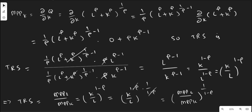We now calculate the technical rate of substitution, which is the ratio of marginal physical productivities, and this equals (K/L) to the power (1 minus rho). To solve for K/L, we raise both sides to the power 1 over (1 minus rho), which cancels on the right-hand side, giving K/L equals (MPL / MPK) to the power 1 over (1 minus rho).